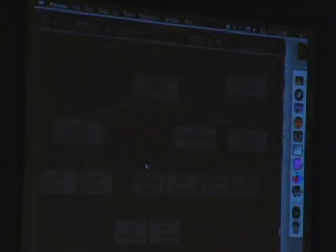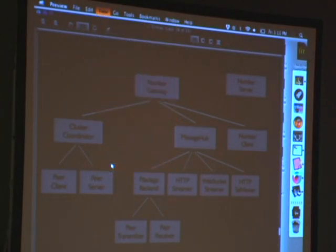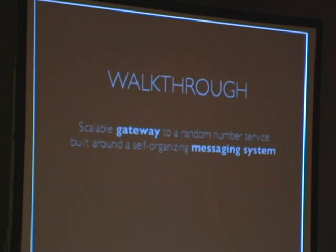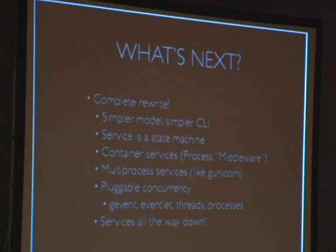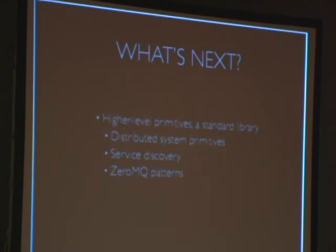So we more or less accomplished what we were going for — we made a gateway to a random number service built around a self-organizing messaging system. The code was pretty simple because it was broken down into these little pieces. Not only do you get the advantage of simple code, but you can now reuse them and recompose them in different ways. If you're interested in Ginkgo, it's actually open source and we're rewriting it. It would be nice to build some higher-level primitives — real versions of the stuff we just saw — that you could use as a standard library for building distributed systems.